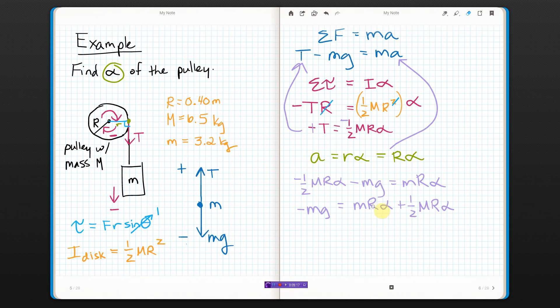I'm going to factor out an alpha. There we go. And then divide both sides by this ginormous chunk. So negative MG over little M capital R plus one-half big M capital R as a quantity, that should equal alpha.